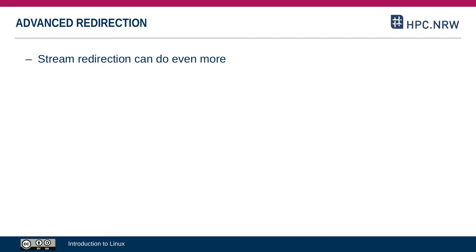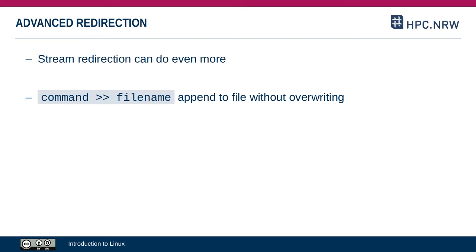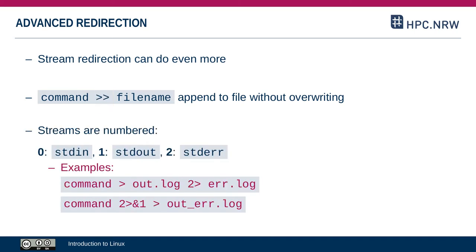Those are the most basic ways of redirection, but there are others too. For example, using two greater-than signs appends output to an existing file instead of overwriting it. The streams are also numbered, so you can address them directly by number. For example, the output from a command can be redirected to one file while error messages are directed to a different file by addressing the error stream directly. You can also redirect the error stream into standard out so they're both written to the same log file.